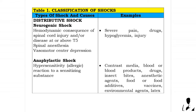Distributive shock — neurogenic shock causes: hemodynamic consequence of spinal cord injury or disease at or above T5, spinal anesthesia, and vasomotor center depression from severe pain, drugs, hypoglycemia, and injury.